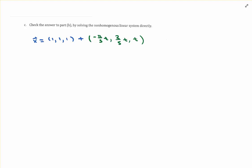We'll now verify this is correct by solving the non-homogeneous linear system directly. To do that, put the non-homogeneous linear system in an augmented matrix format, much like the homogeneous linear system. Top row: 1, negative 2, 3, and 2. Second row: 2, 1, 4, and 7. Third row: 1, negative 7, 5, and negative 1.